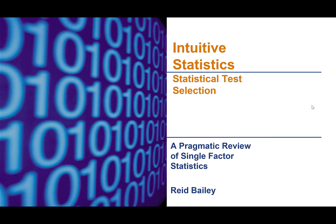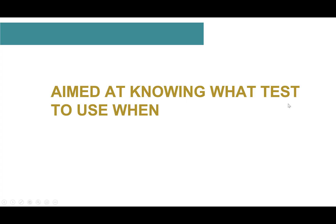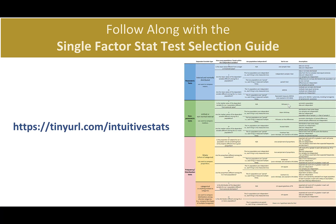My name is Reed Bailey, and this is a video about statistical test selection for single-factor statistical tests. It's part of a series called Intuitive Statistics, where the real aim is getting you to understand when to use which test, assuming that you already know about the different tests. We have a guide that maps out when to use certain tests, available at the URL shown here.